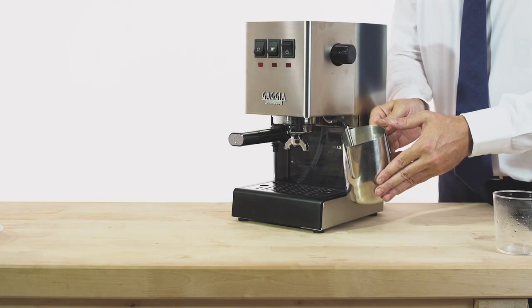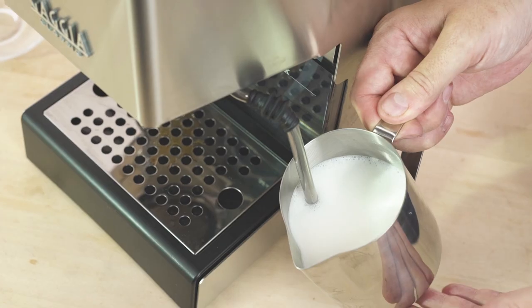Once you get the perfect froth, push the steam wand to the bottom to warm the milk. Then turn off the steam dispensing knob.